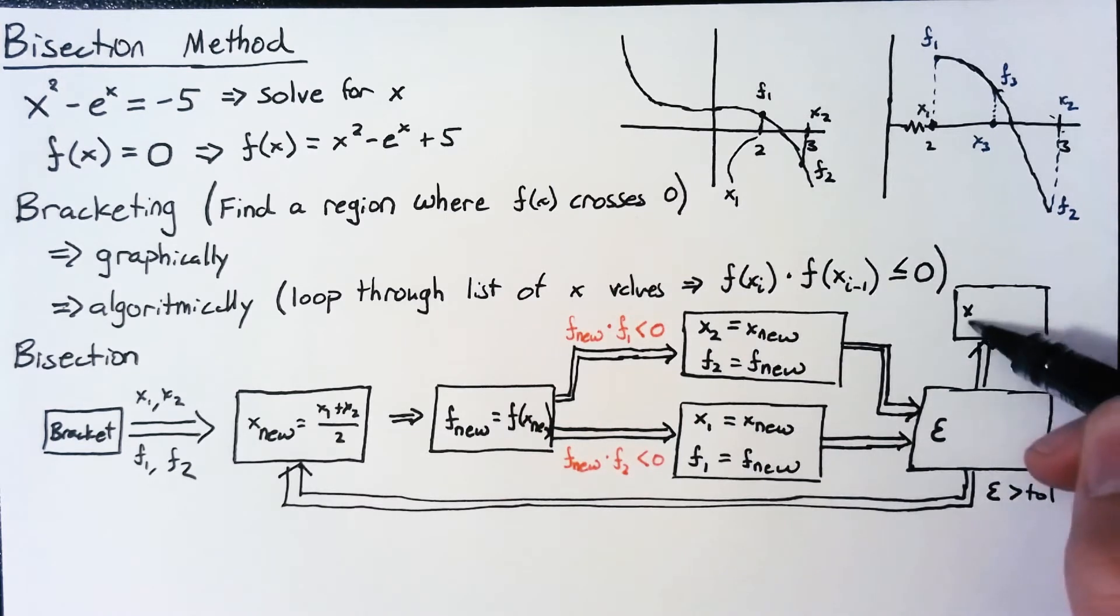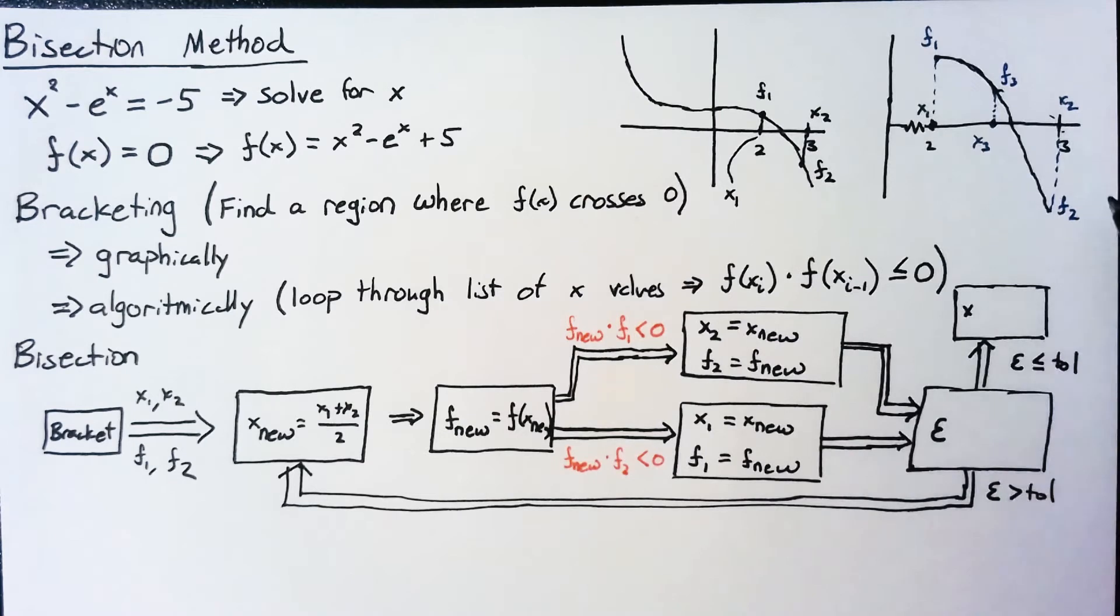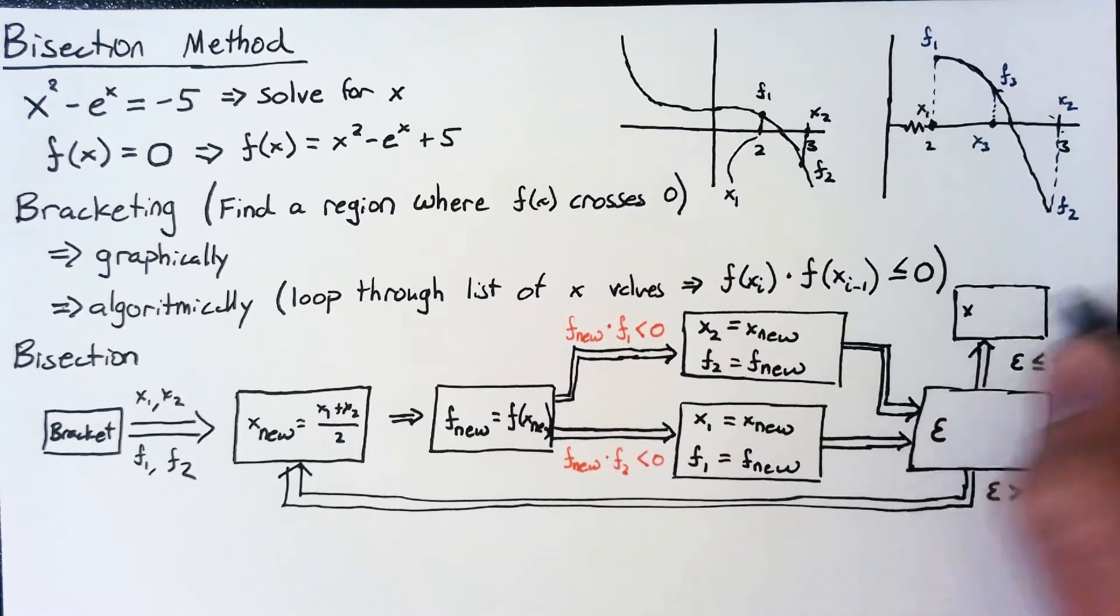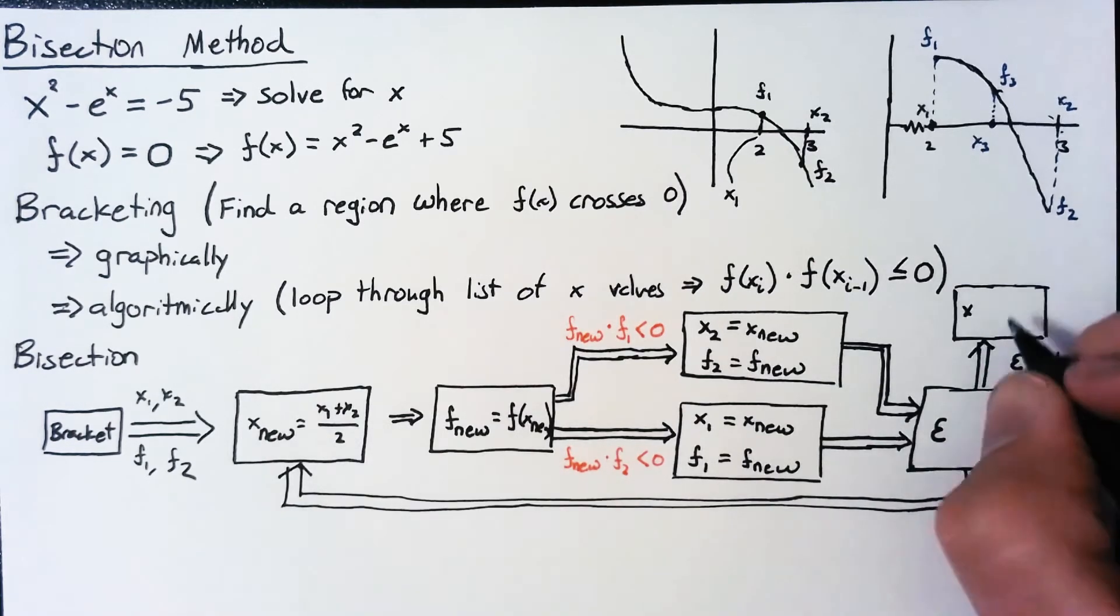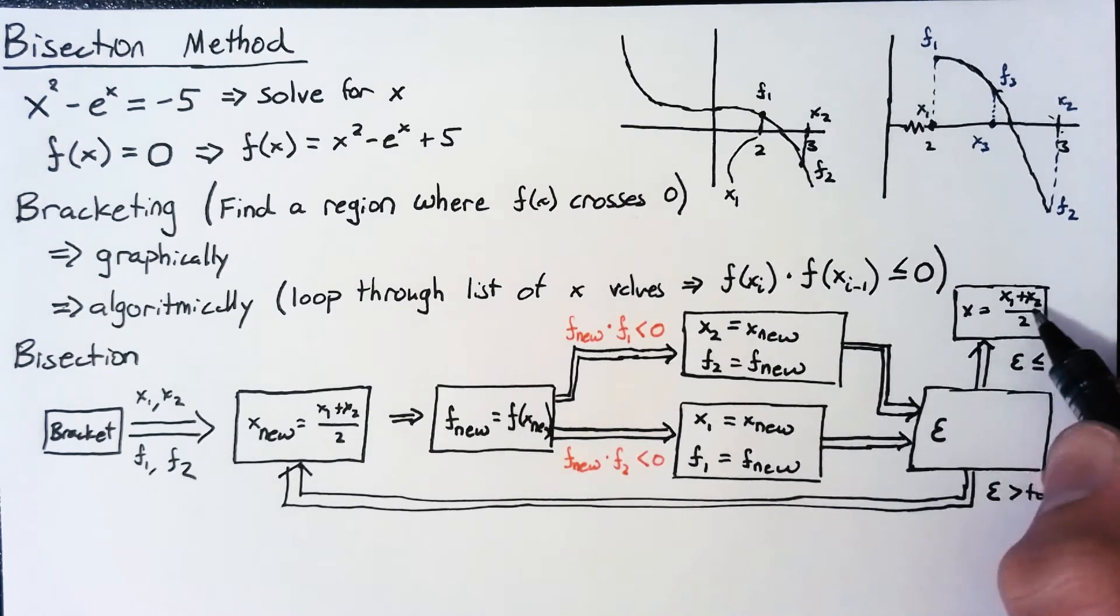And it actually depends on how we define x over here. If we choose x is equal to x1 or x2, which are perfectly valid options, then we know that we have an error that is a maximum of the difference between those two values. But we can just set it to the new midpoint. We can just take the midpoint again. And then we know that the max we're going to be off is half the distance between these two values.